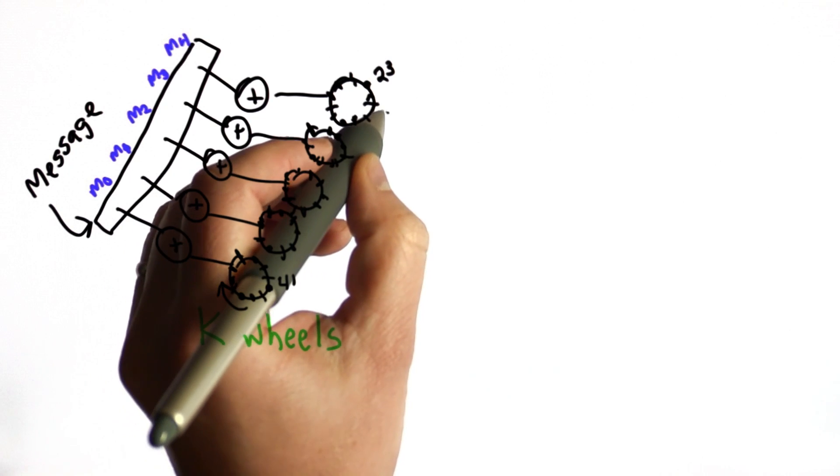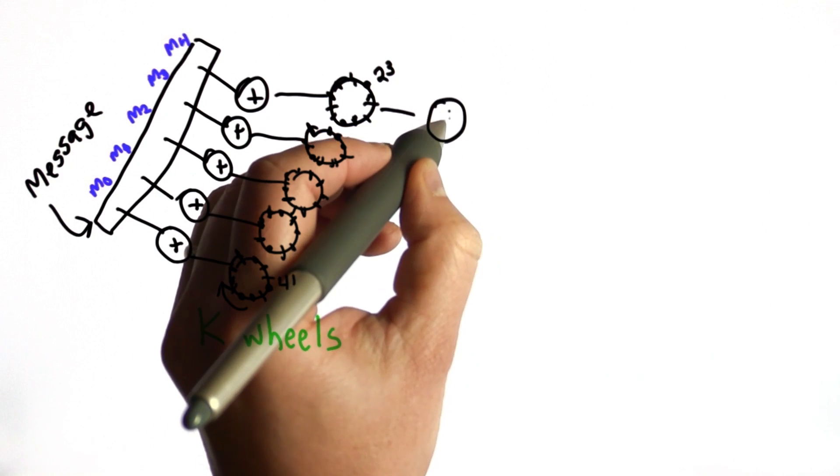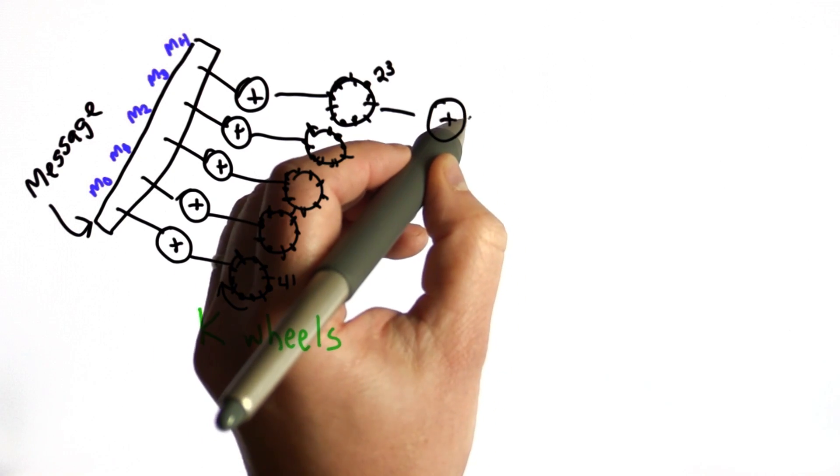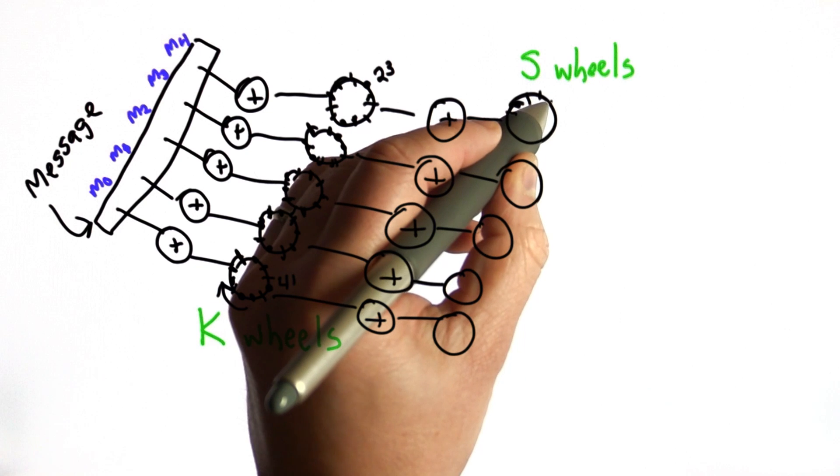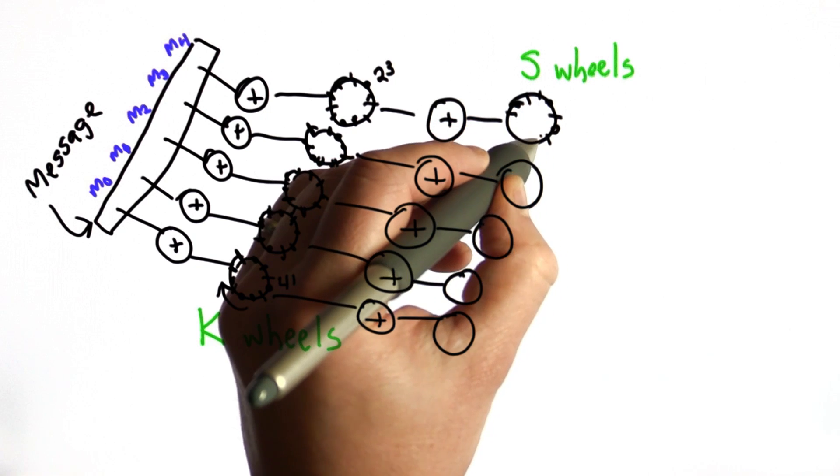This would also be XORed with the result from the S wheels, which works similarly. They also had positions that were either 0s or 1s around the wheels.